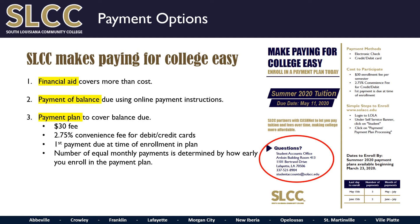Only the bank routing number and full account number is needed to process this type of payment. Payments may be made from either checking or savings accounts. If you make a payment by debit or credit card, you will incur a 2.75% convenience fee based on the amount of payment. This fee does not go to SLCC — it is remitted directly to CashNet. The only additional charge to enroll in a payment plan is a one-time enrollment fee of $30, which is added to the first payment. This first payment plus the $30 must be remitted at the time of enrollment, and the remaining balance is divided into equal monthly payments for the duration of the plan.